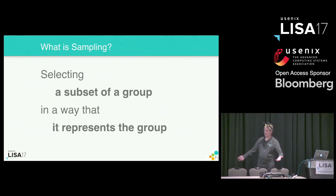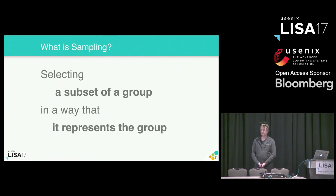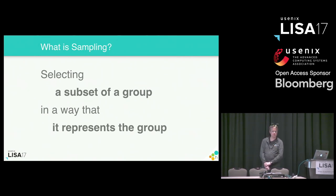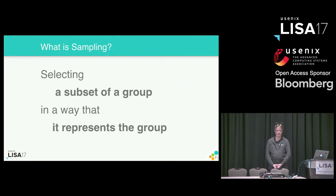At the most basic level, what I mean by sampling is something that is not new by any stretch. Science has been doing this for years, decades, centuries. You want to take a smaller section of your population and believe that it will represent the larger population, so that you can look at a small set of things and understand patterns you see in the larger system that you're trying to understand.